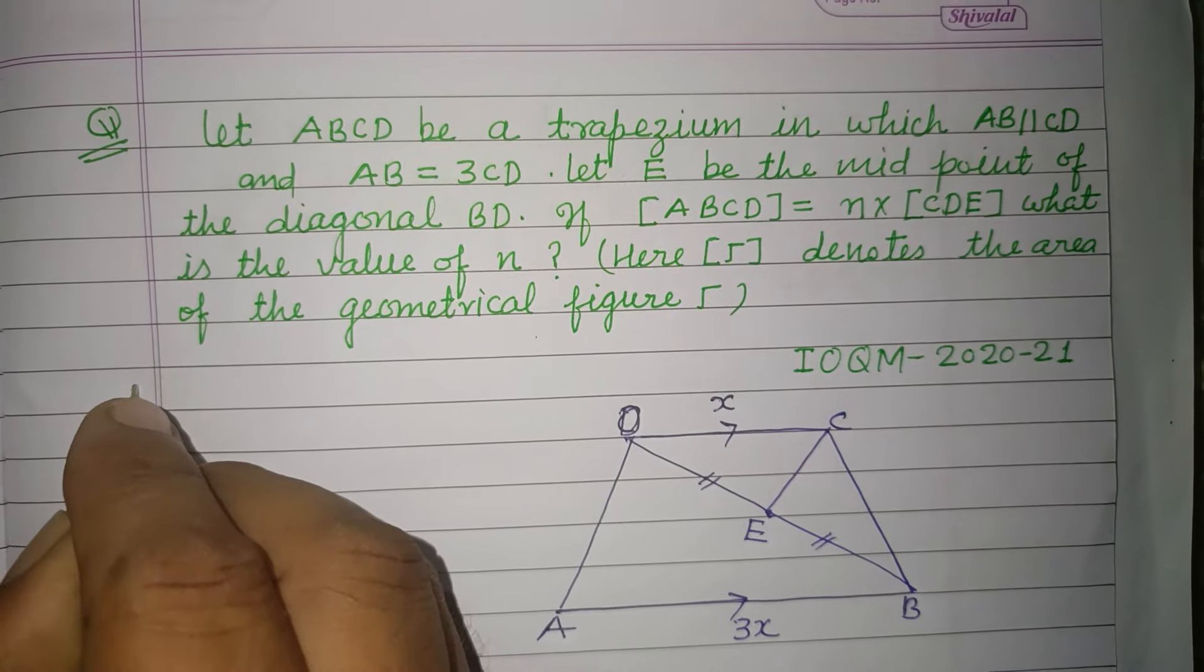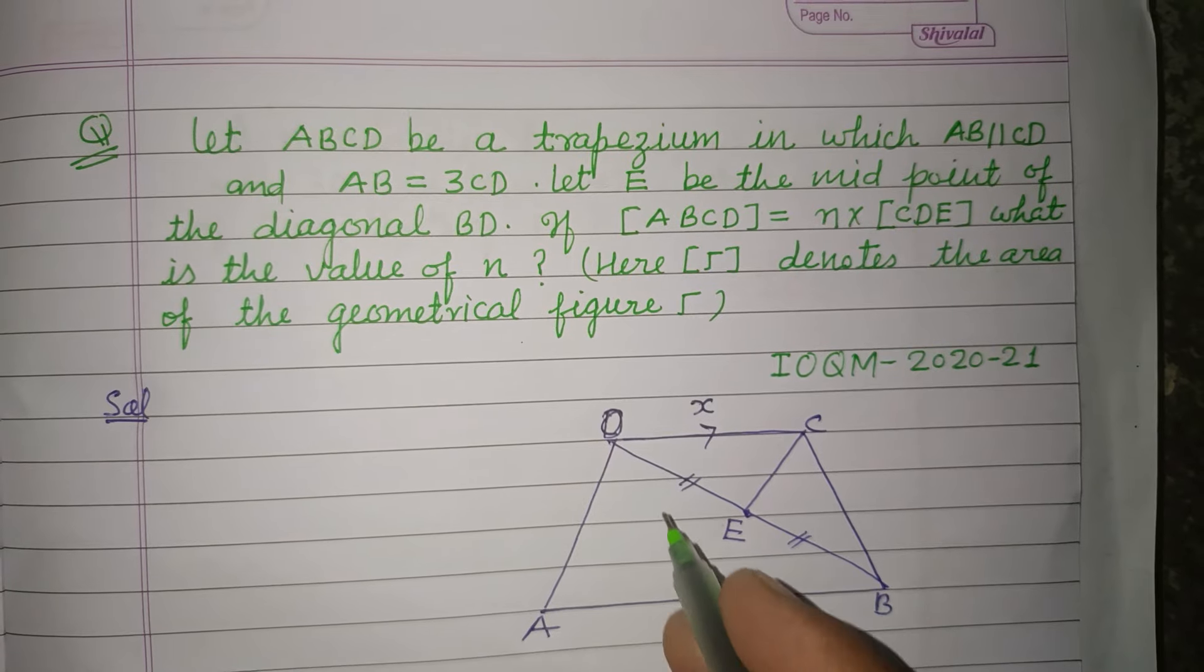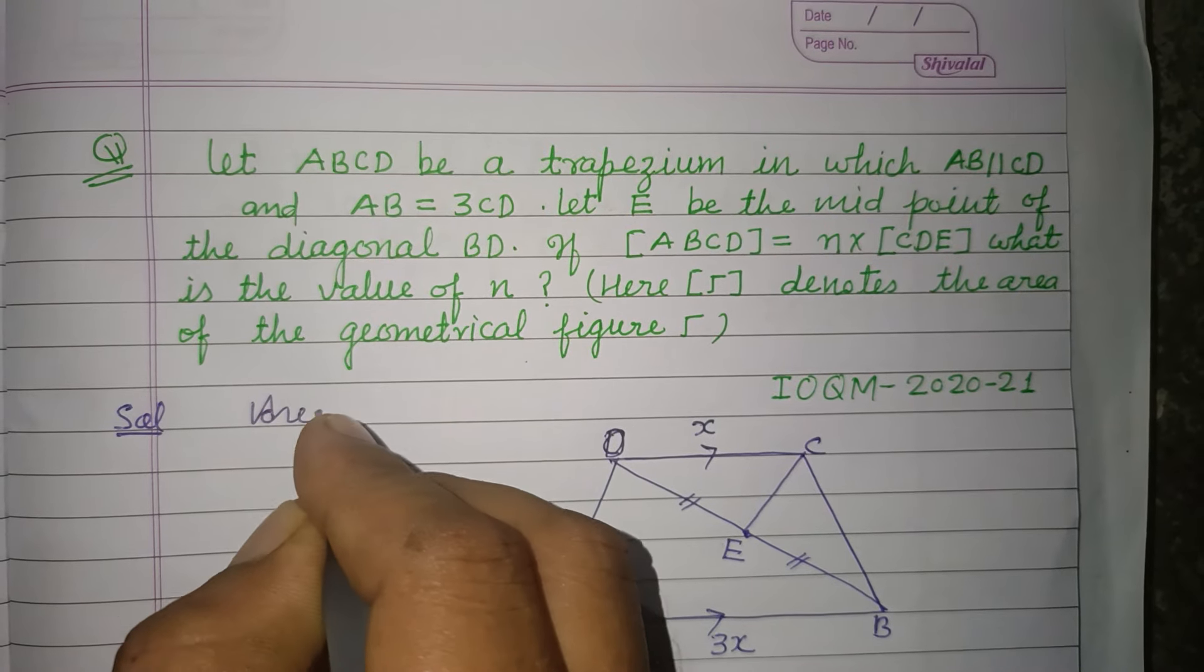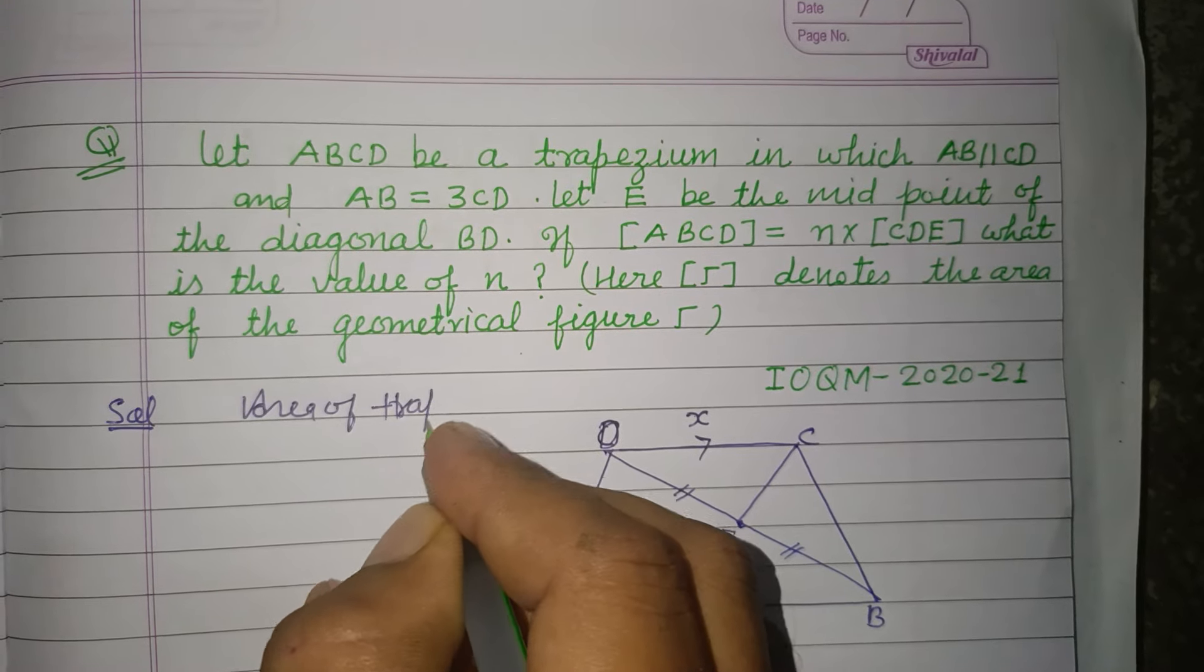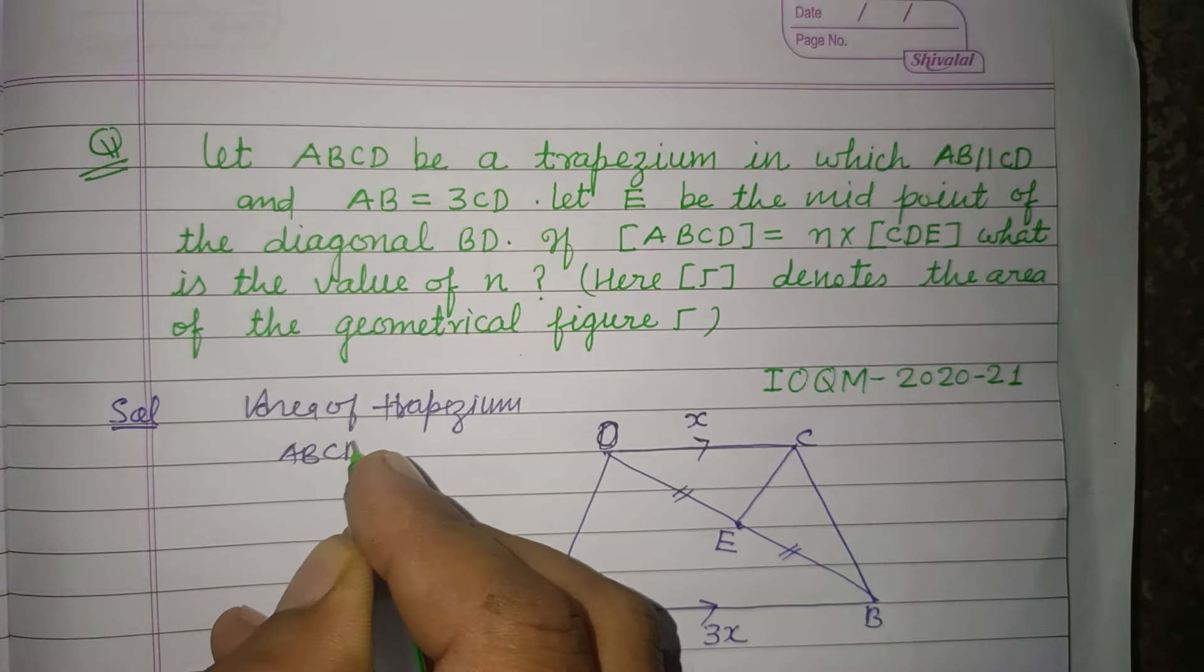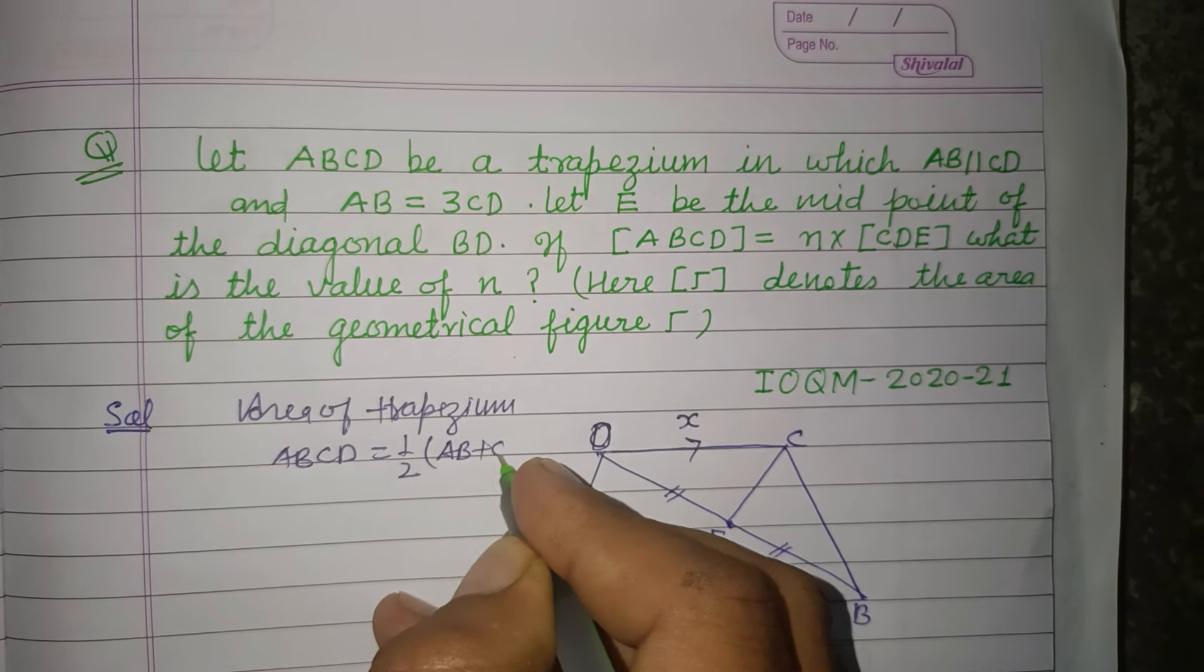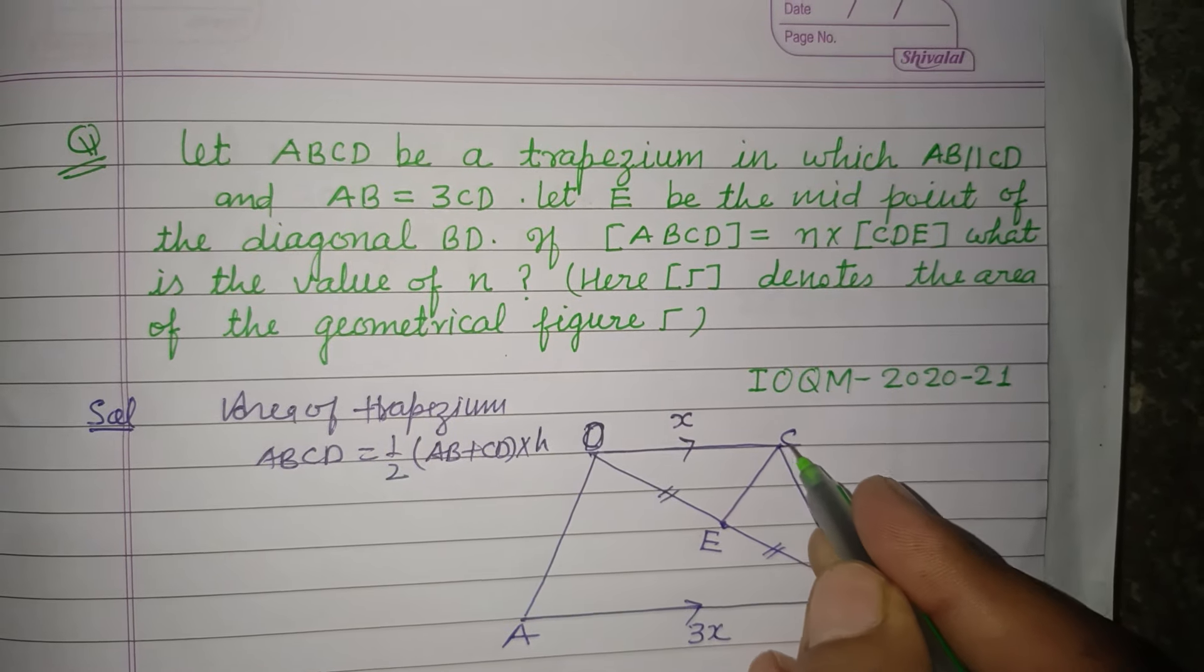So students, if h is the height, the distance between these two parallel sides, then area of trapezium ABCD equals half the sum of parallel sides AB plus CD multiplied by the distance between them, that is h.